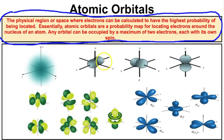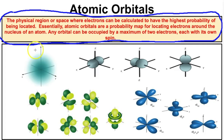In an earlier video we learned that you cannot pinpoint the exact location of an electron in the electron cloud surrounding the nucleus. Instead, what you can do is come up with the probability for where those electrons might be, and that probability basically represents the atomic orbitals — the calculated regions in the electron cloud where those electrons have the highest probability of being.